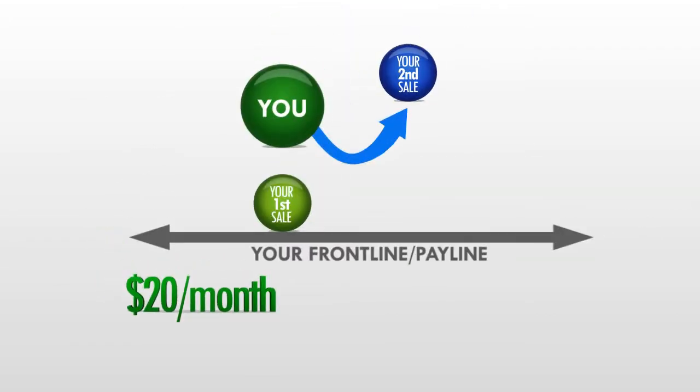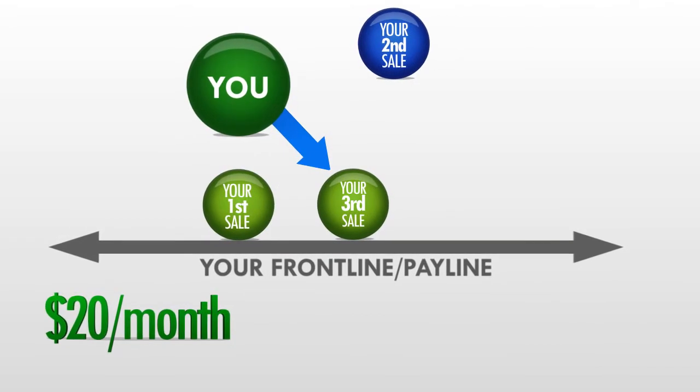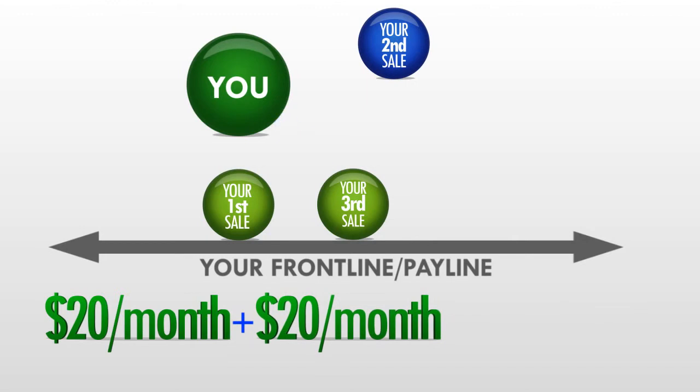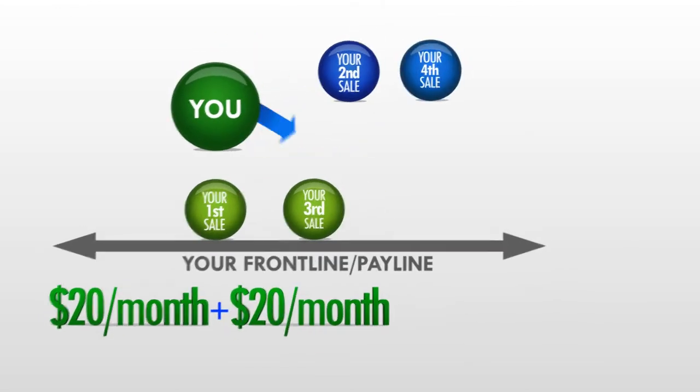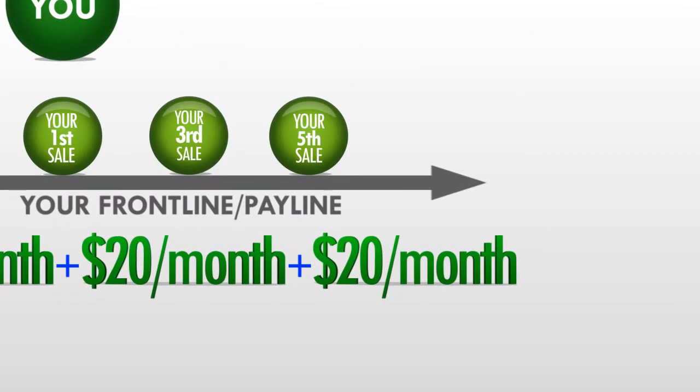Your second sale rolls up. Your third sale once again falls directly on your front line. And at this point, you're earning $40 per month. Your fourth sale rolls up. Your fifth sale goes to your front line again, paying you yet another $20 monthly commission.